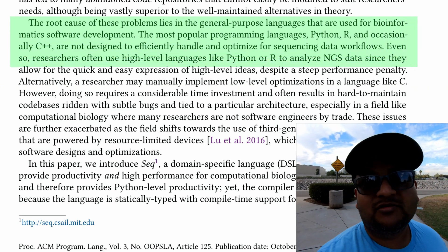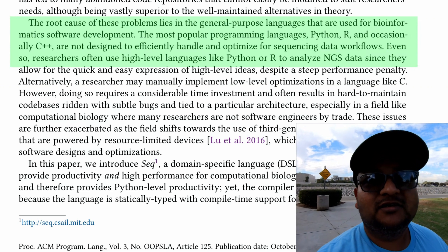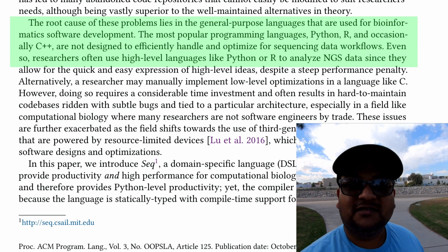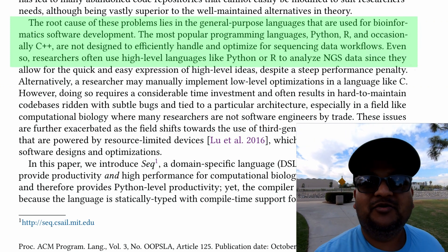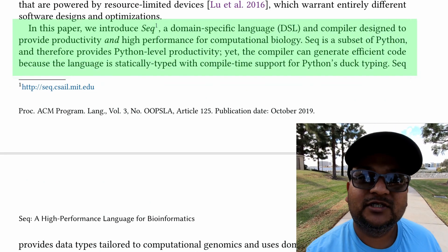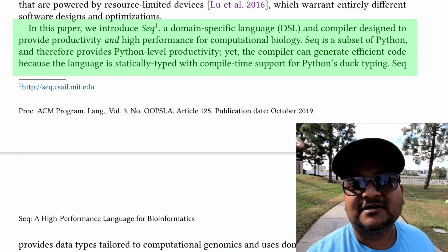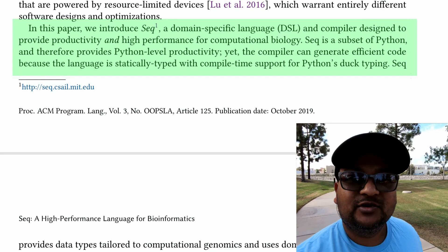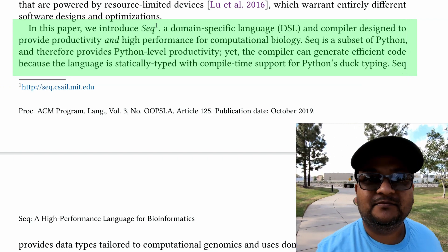The basic problem is that using general-purpose programming languages like Python — which is very popular in bioinformatics — or C++, the people doing this research are biologists, not programmers. They're not experts in tuning the performance of these pipelines. The authors in this paper are proposing a new language called Seq. Seq is a subset of Python — they chose to make it a subset of Python because Python is the dominant programming language used in bioinformatics right now, which makes adoption easier.